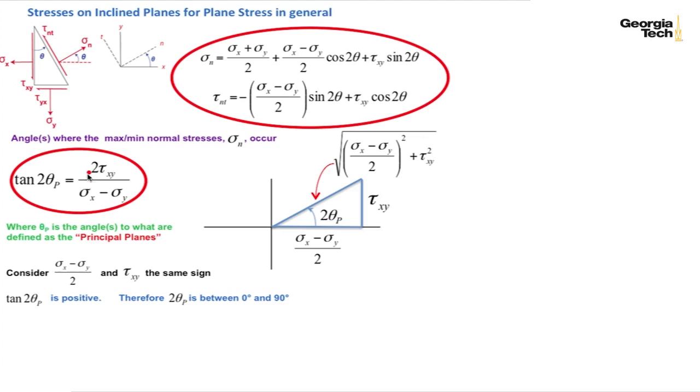They can also have the same sign if they're both negative on the top and the bottom. And then we're going to be between 180 degrees and 270 degrees because we have a negative in the tau xy or the shear stress direction and a negative in the sigma x minus sigma y over 2 direction.